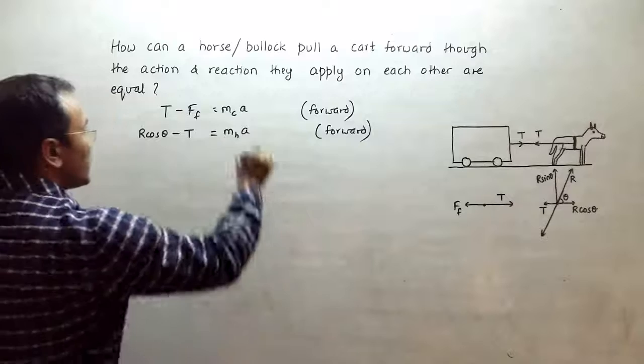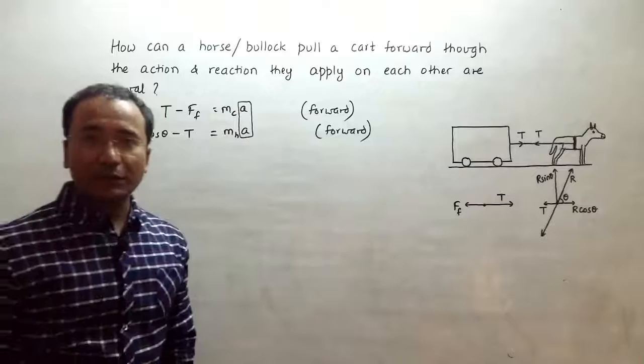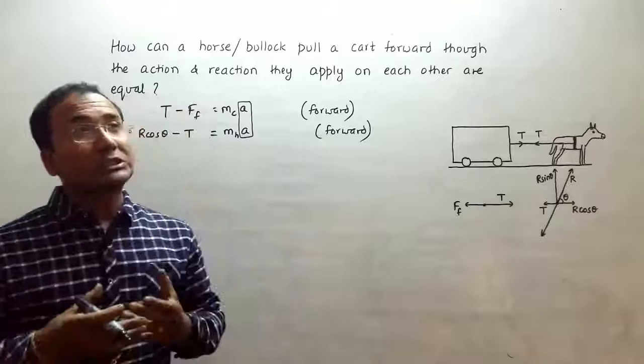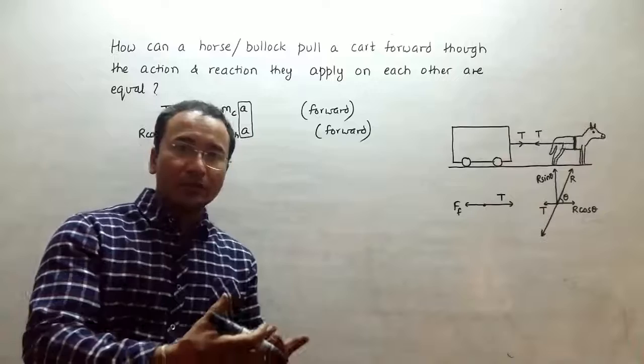Now these two accelerations are the same because the horse and the cart should have same acceleration. If we say that the horse will have more acceleration than the cart, then they will separate—the cart will be left behind. And if we say that the cart has more acceleration than the horse, then the cart will hit the horse and the horse can trip down or get injuries. So they should have same acceleration; they are designed that way.